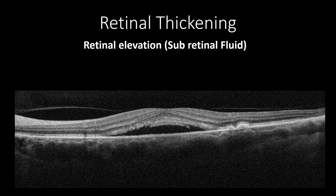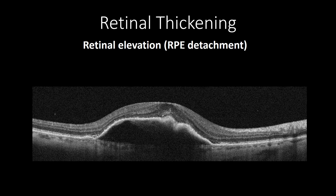This cross-section of central serous chorioretinopathy shows an accumulation of fluid between the neurosensory retina and the RPE, with relatively normal retinal thickening, elongation of photoreceptors, small pigment epithelial detachment, and thickened choroid with dilated vessels. In contrast, pigment epithelial detachment may cause retinal indentation as fluid or a fibrovascular membrane accumulates between Bruch's membrane and the RPE, causing their separation, elevating the RPE layer, and causing indentation of the neurosensory retina.